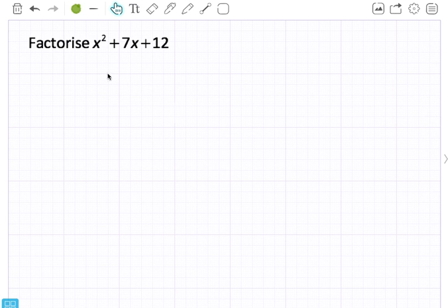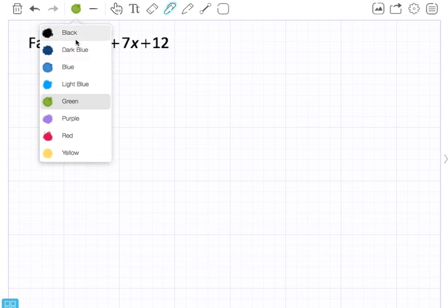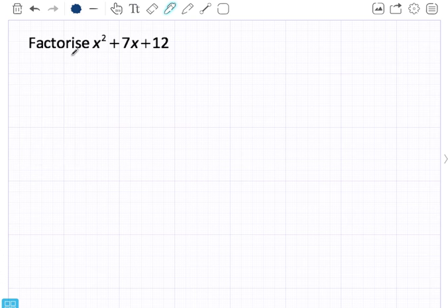This is a very simple factorization and I'm going to keep it quite easy because I've got a positive number and a positive number. Factorization just means to introduce a bracket, or in this case two brackets.